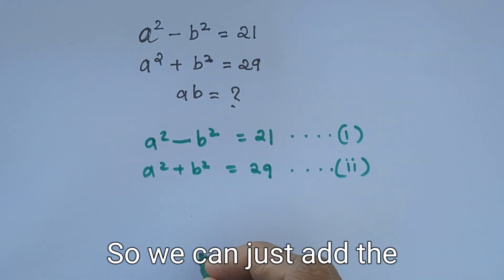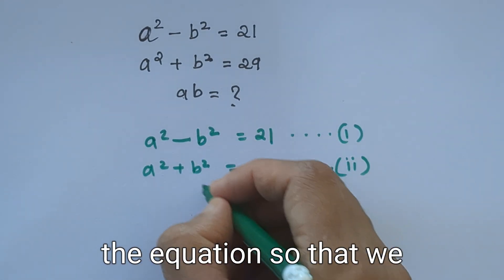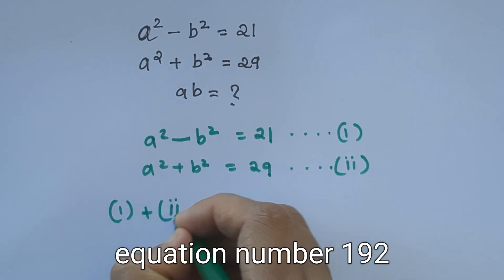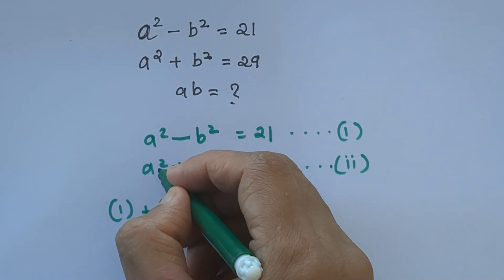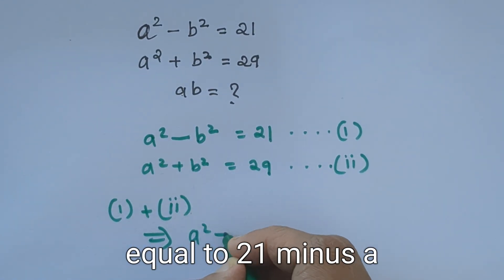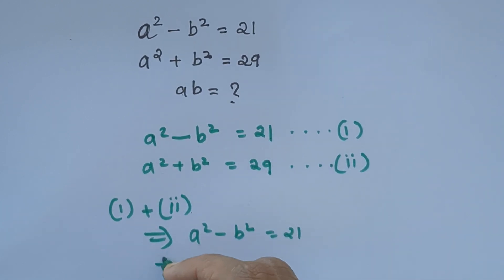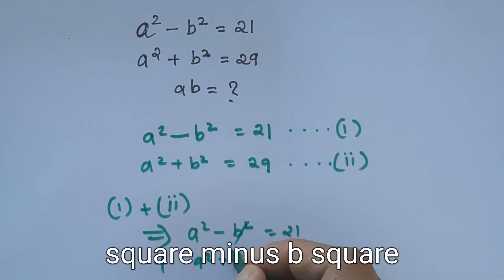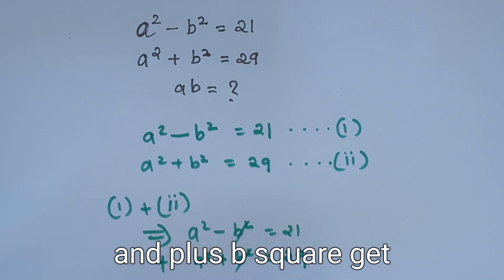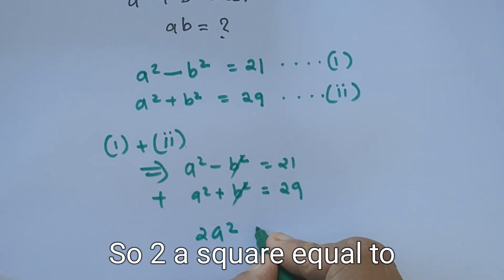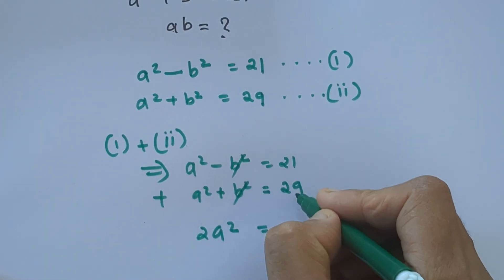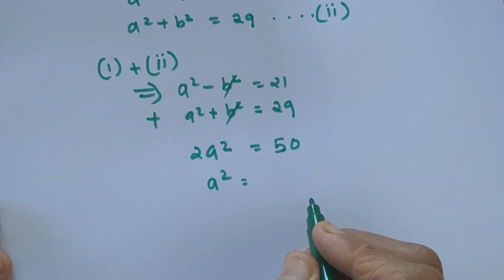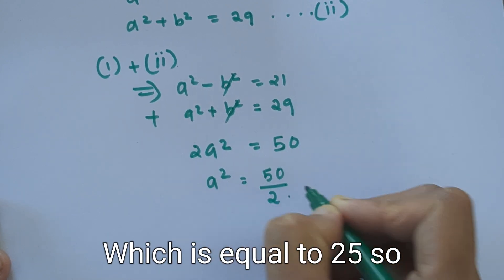What we can do is add the equations and subtract the equations so that we can eliminate one term. First, let's add equation 1 and equation 2: a squared minus b squared equals 21, plus a squared plus b squared equals 29. The negative b squared and positive b squared cancel, and we get 2a squared equals 21 plus 29, which is 50.